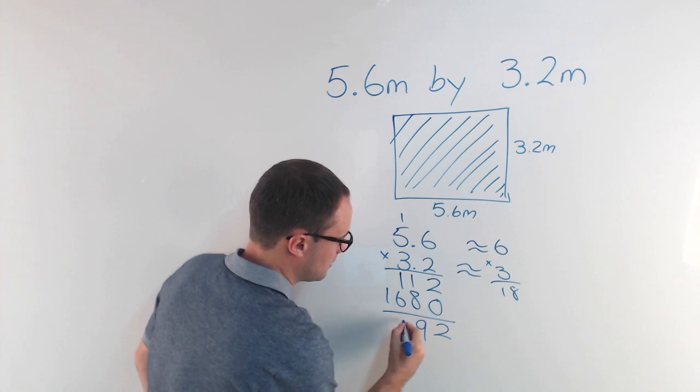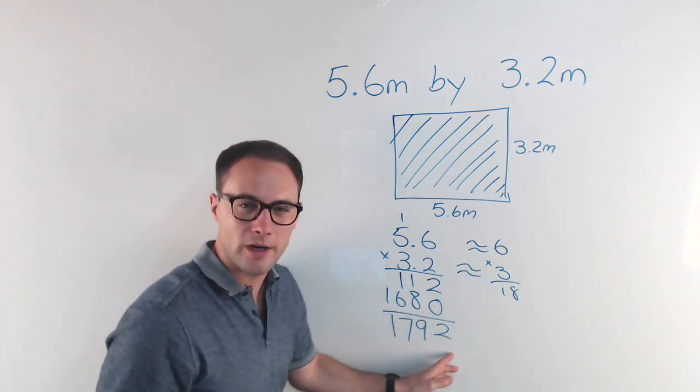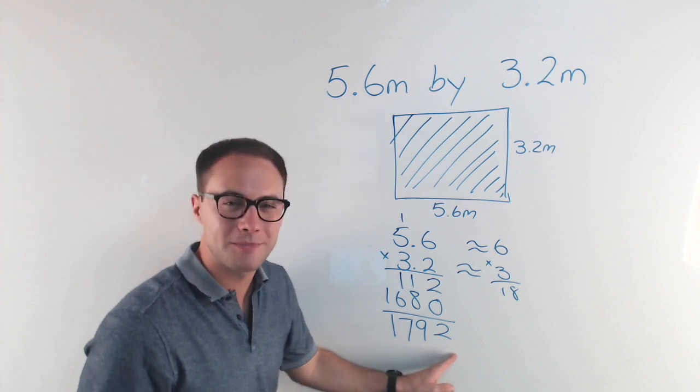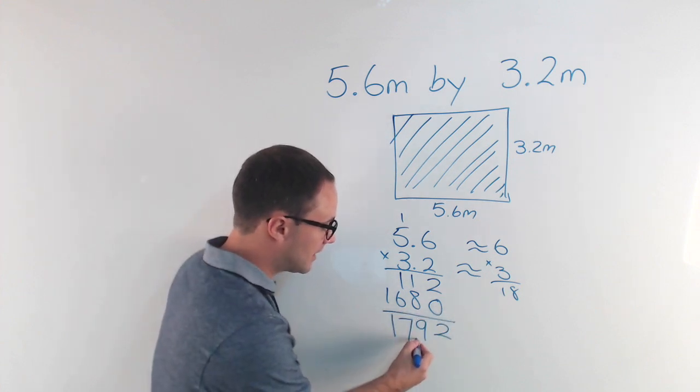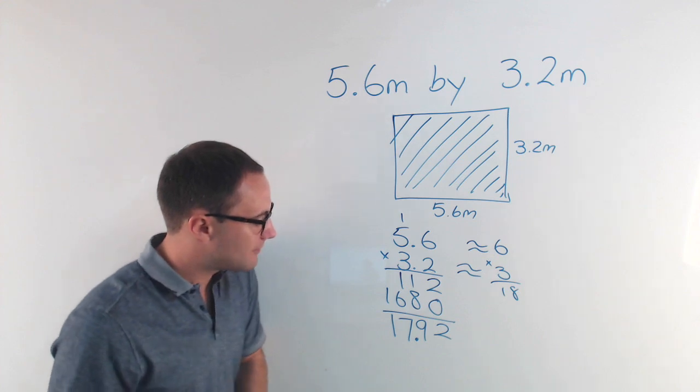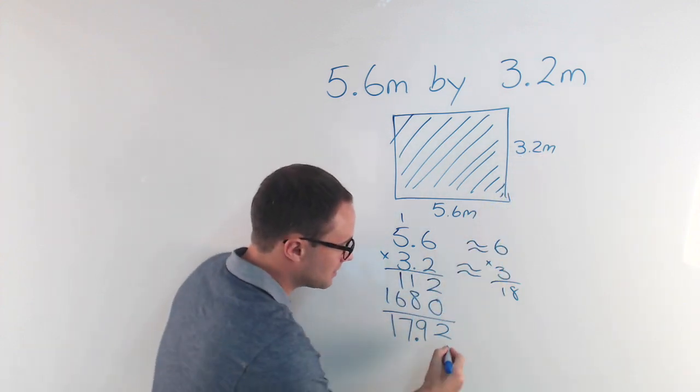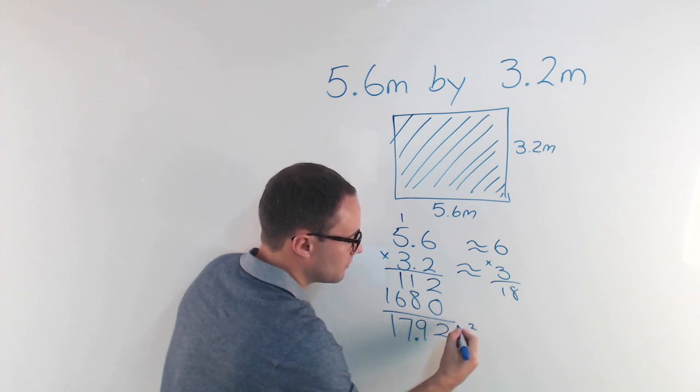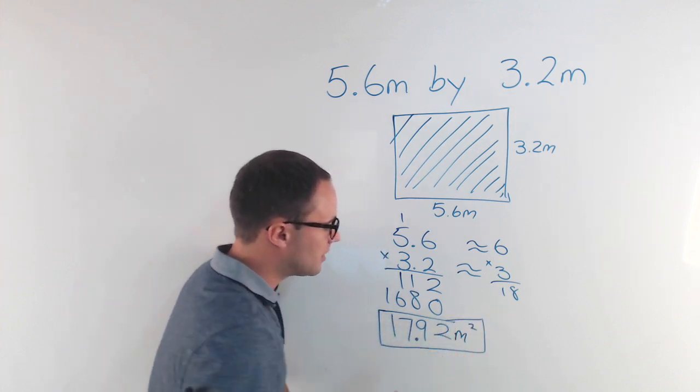Now if you're thinking, well, where—this is decimals, right—where's my decimal point going to go? You think it should be close to 18. Decimal point goes there: 17.92. Don't forget your units—it was meters times meters, so that becomes meters squared, which makes sense for area. So 17.92 meters squared.